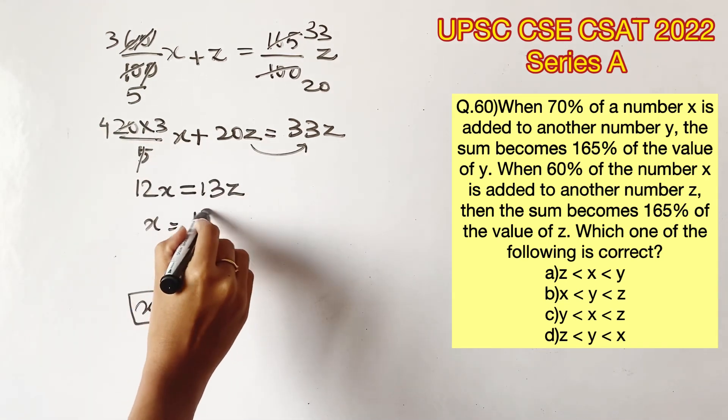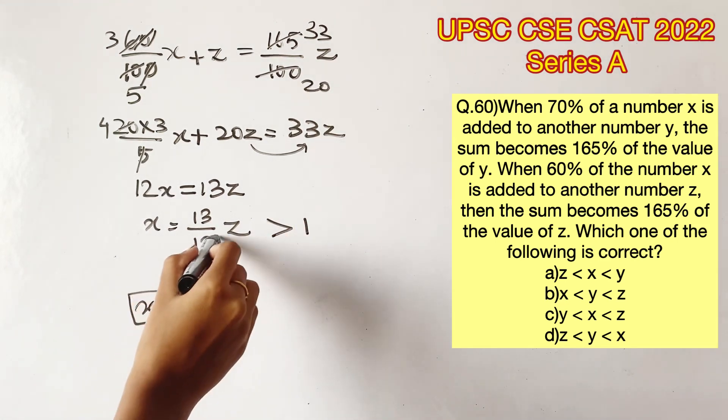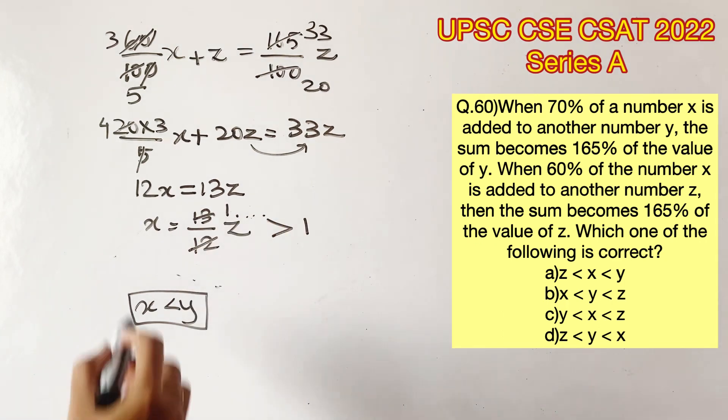So x is equal to 13 by 12 z. Now we know 13 by 12 is greater than 1 because it will be 1 point something. So x is equal to 1 point something z. When a value is multiplied with a number greater than 1, the value is going to increase.